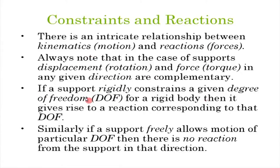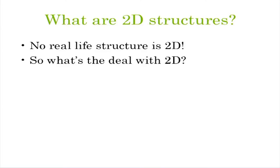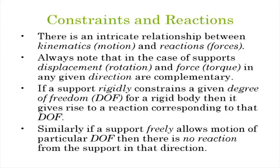There are two complementary things: constraints and reactions, with an intricate relation involving kinematics. Kinematics refers to whether something is rotating or translating — parameters of motion we can observe. The key point is: if a support rigidly constrains a given degree of freedom for a rigid body, it gives rise to a reaction corresponding to that degree of freedom. Conversely, if a support freely allows motion in a particular degree of freedom, there is no reaction from that support in that direction.